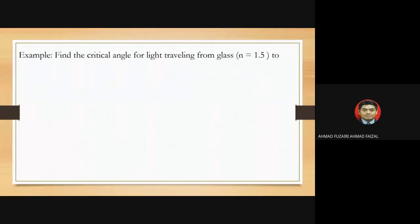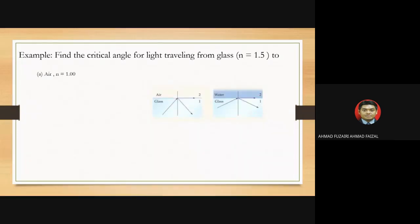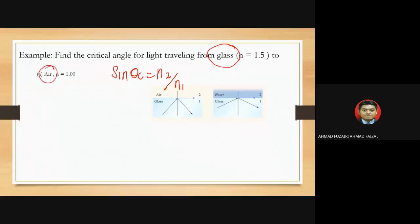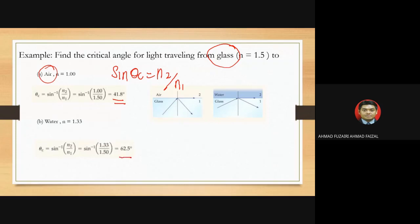Finding the critical angle for light traveling from glass to air: applying sine theta c = n2/n1, where n1 is glass and n2 is air, substitute the values to get the critical angle of 41.8 degrees. For glass to water, applying the same equation gives a critical angle of 62.5 degrees.